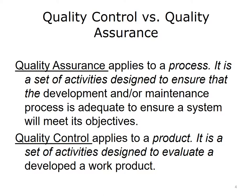Many people and organizations are confused about the difference between quality assurance (QA) and quality control (QC). They are closely related but different concepts. Quality assurance applies to a process — it is a set of activities designed to ensure the development and maintenance process is adequate to ensure a system will meet its objectives. Quality control applies to a product — it is a set of activities designed to evaluate a developed work product. Your product is care of your patients. Controlling cost to the patient by designing the best system is an example of quality control. Quality assurance is reviewing charts of patients for opportunities to change the system for the benefit of patients and the organization.